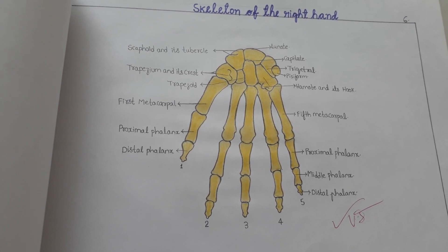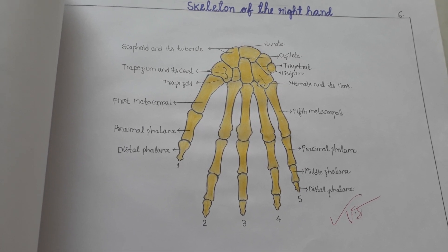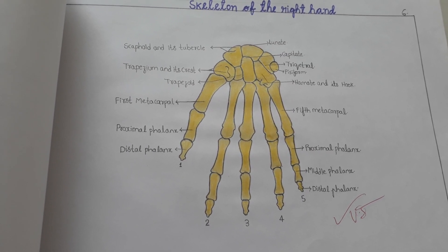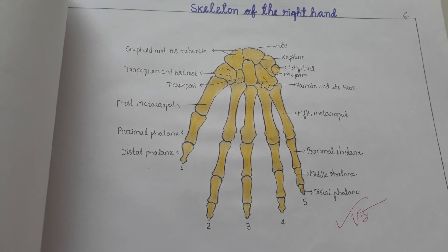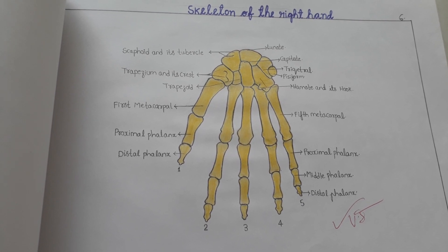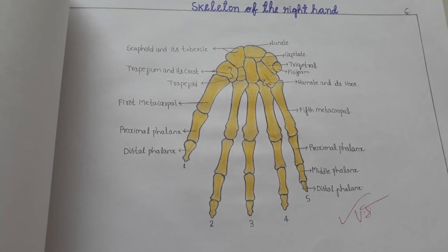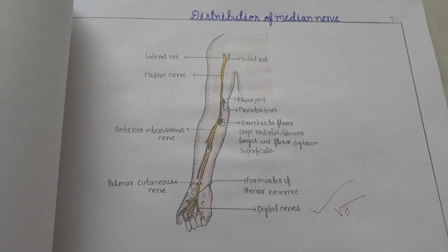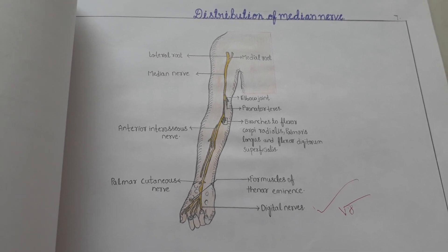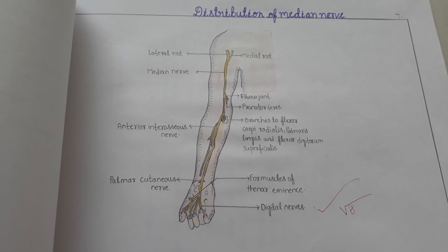All of these were explained in the anatomy practicals — given to us and very clearly explained. Any part of this can be asked as a spotter. This is the distribution of the median nerve, which was also explained and can be kept as a spotter — they will point out and ask about any part.